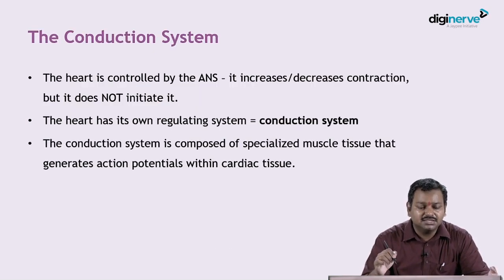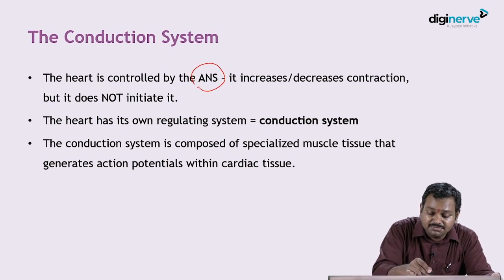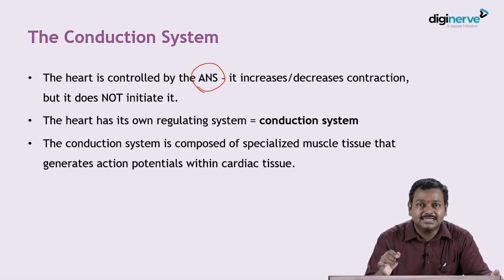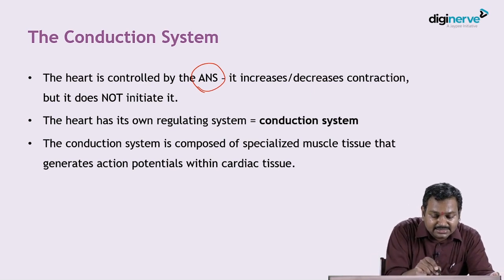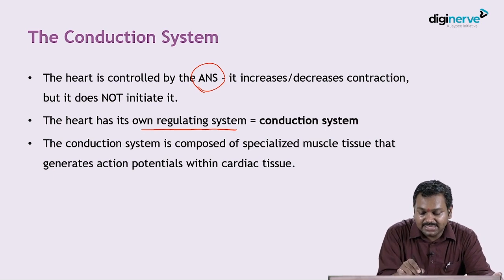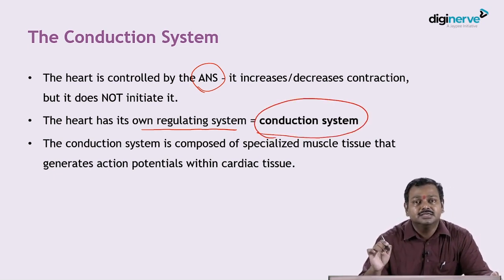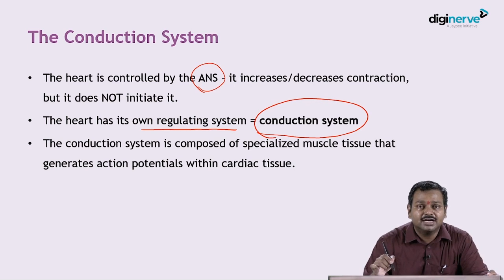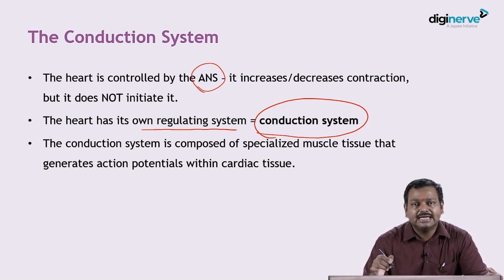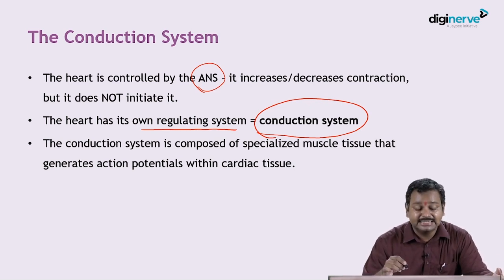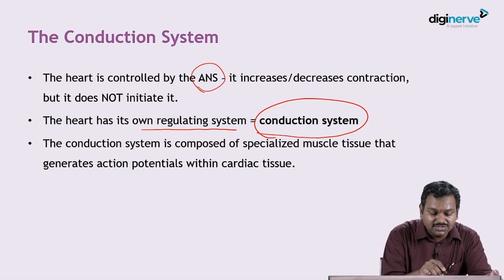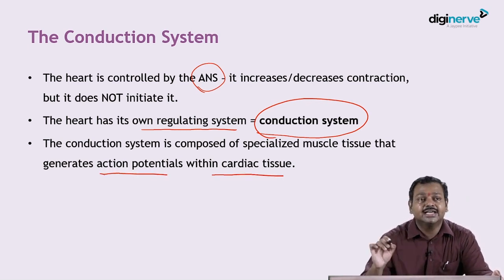Starting with the conduction system of the heart, we know that the heart is controlled by the autonomic nervous system, predominantly by the vagus — that is the parasympathetic section — that is going to control it. But along with that, the heart has its own intrinsic regulating system, which we call the conduction system of the heart. This conduction system is formed by specialized cells, and various electrolytes like sodium, potassium, and calcium entering and exiting the cell produce various voltages that get recorded. This is the intrinsic conduction system of the heart which generates action potentials within the cardiac tissue.